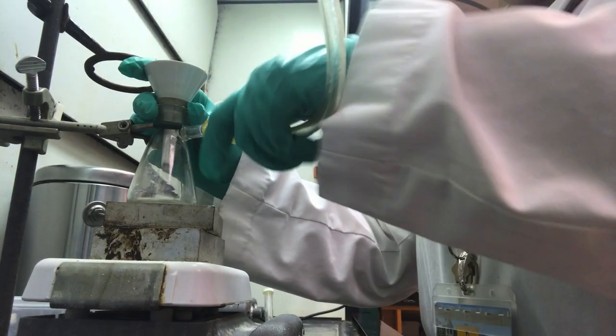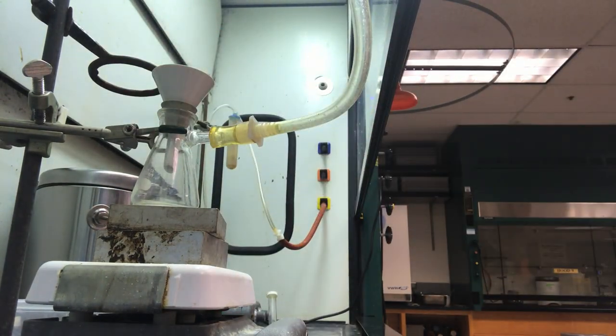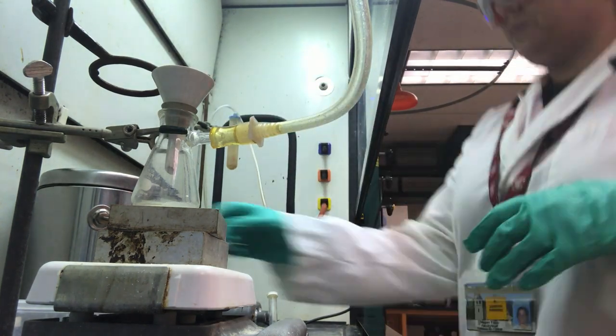The Hirsch funnel should be properly hooked up to the trap in the hood using Tygon tubing. A filter paper is placed in the funnel and rinsed with DI water.